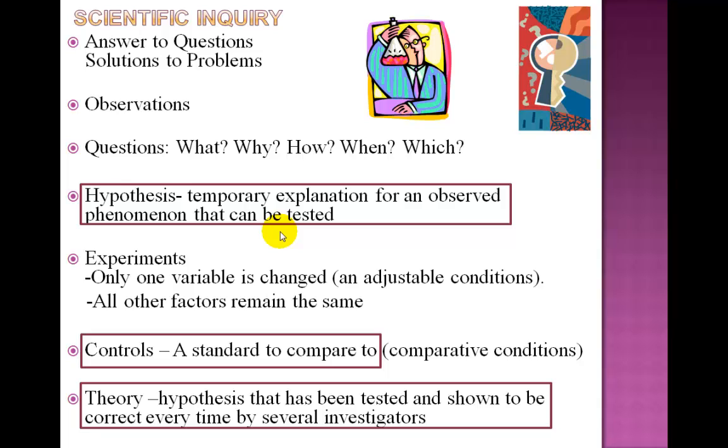Pasteur used a control in his experiment. It is basically a standard to compare to setting up comparative conditions. In his experiment, the flasks that was left open was his control to the flasks that was sealed. Now, in science, a theory is a hypothesis that has been tested and shown to be correct every time by several investigators.